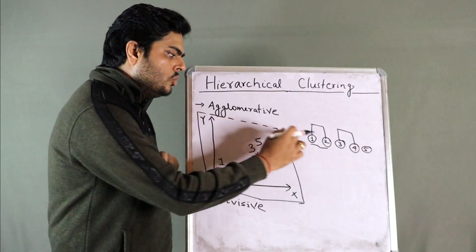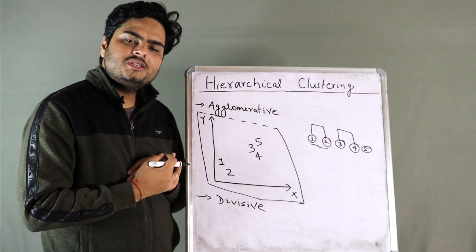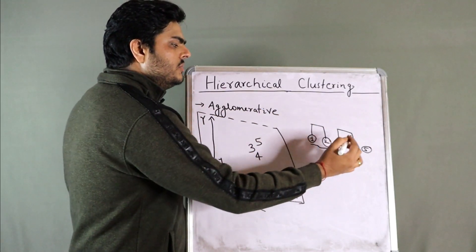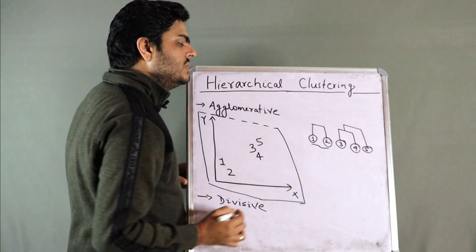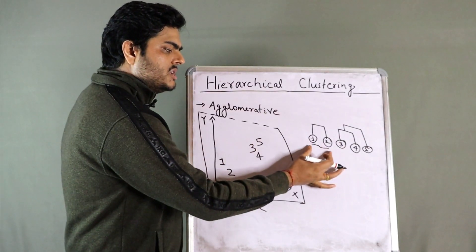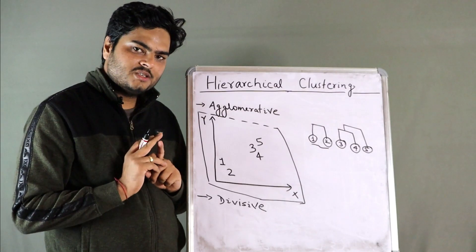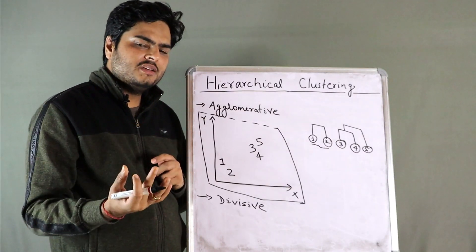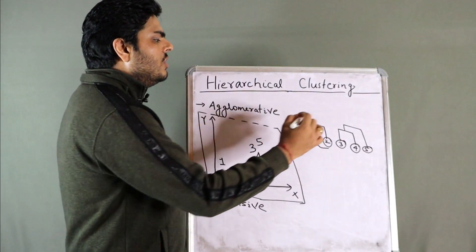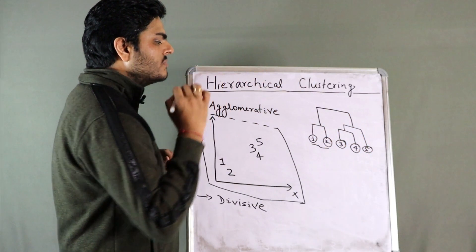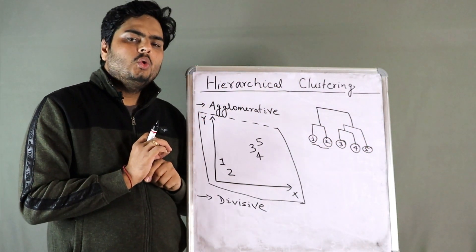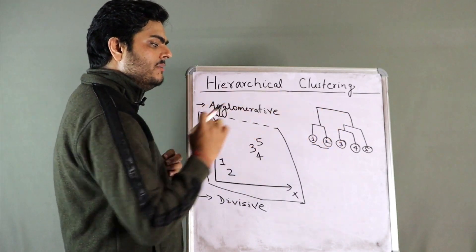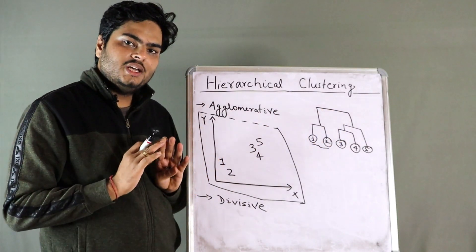Then how many clusters do we have? Three clusters. In the next iteration, it will see: can I merge either of these clusters further? It might see that five is also near to three and four, so it merges five, three, and four into one cluster. Now we have two clusters. We started with five, now we have two. Based on certain parameters we give in sklearn when calling this method, it might also merge all points into one large cluster. So we started with more clusters and kept reducing them level by level. This method is called agglomerative clustering.